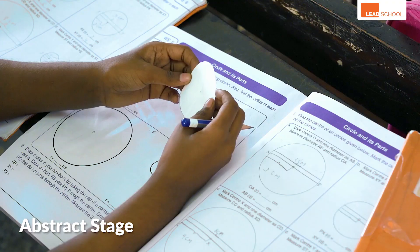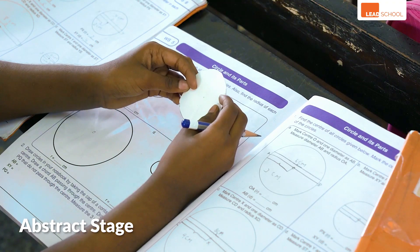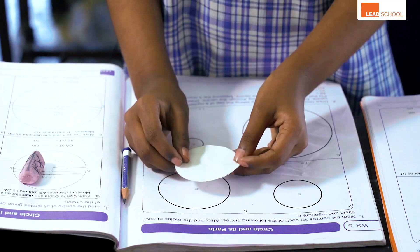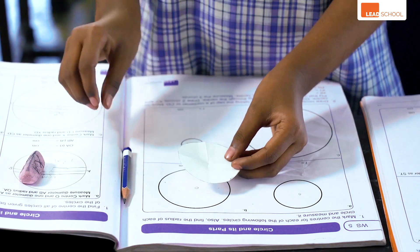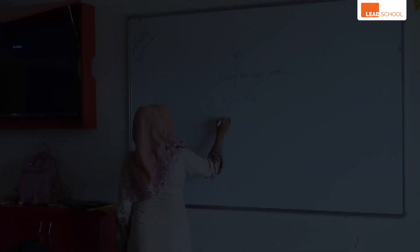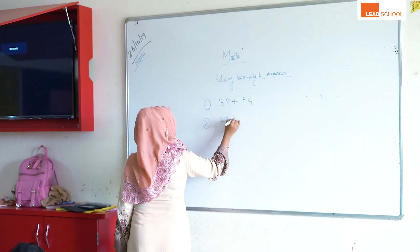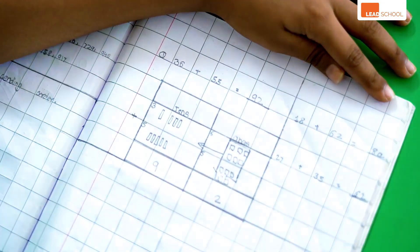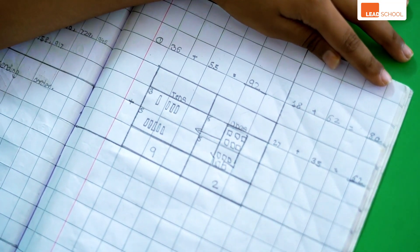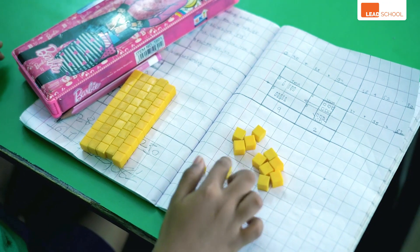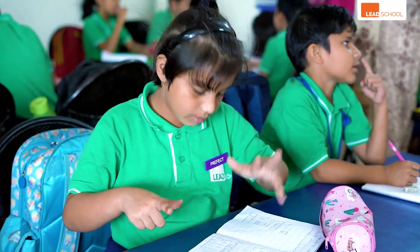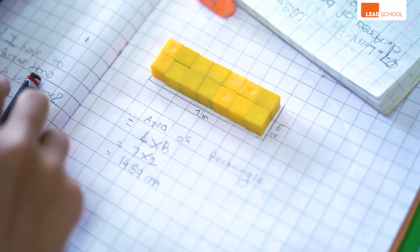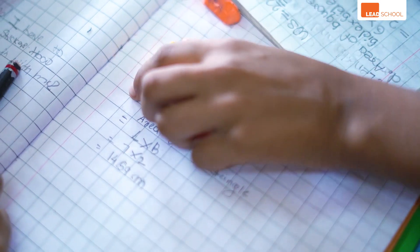Abstract is the final stage where students do math with symbols and numbers. In most schools, students learn math only at the abstract level. But following the Concrete Pictorial Abstract process helps them understand that the math symbols stand for actual quantities.